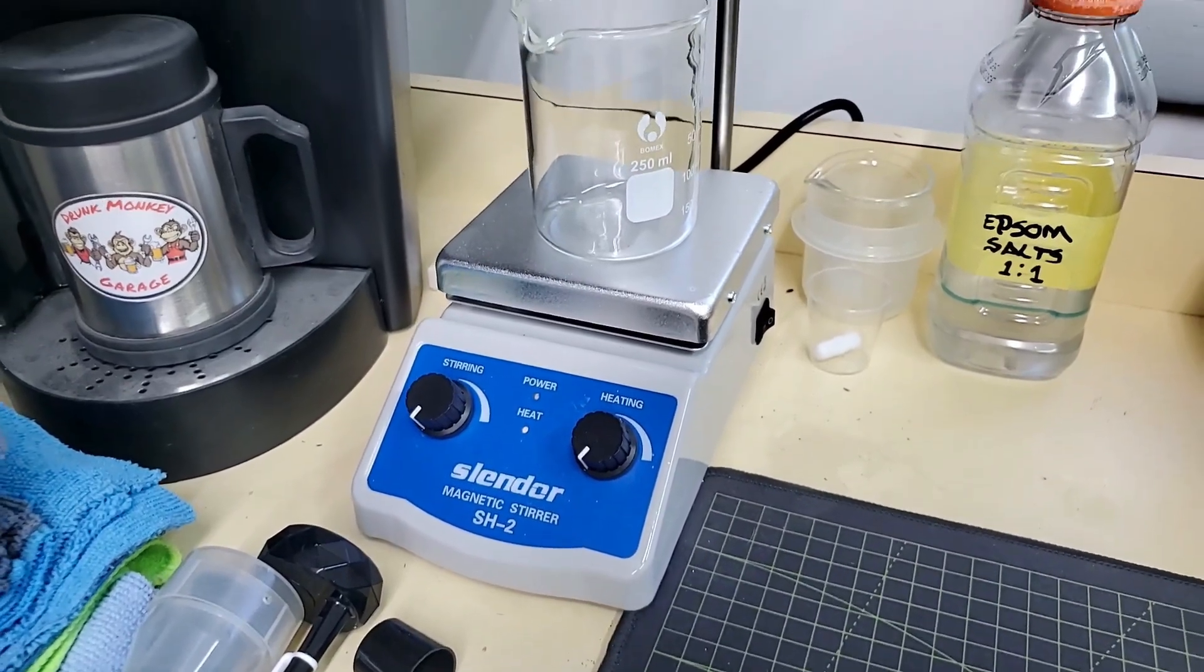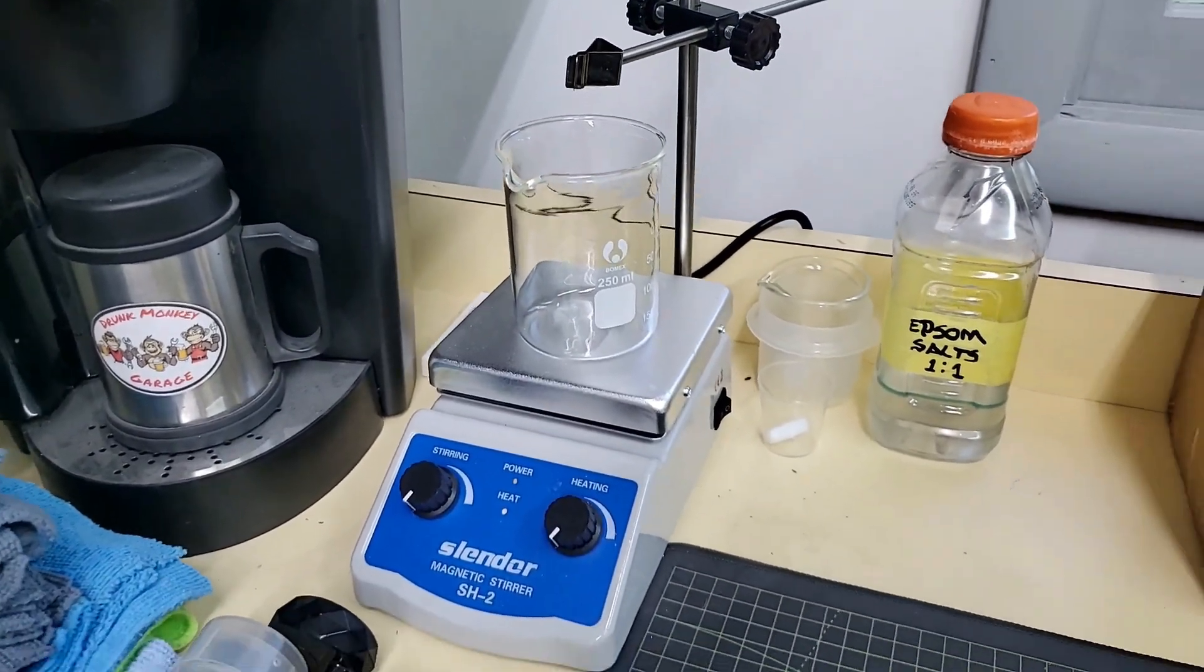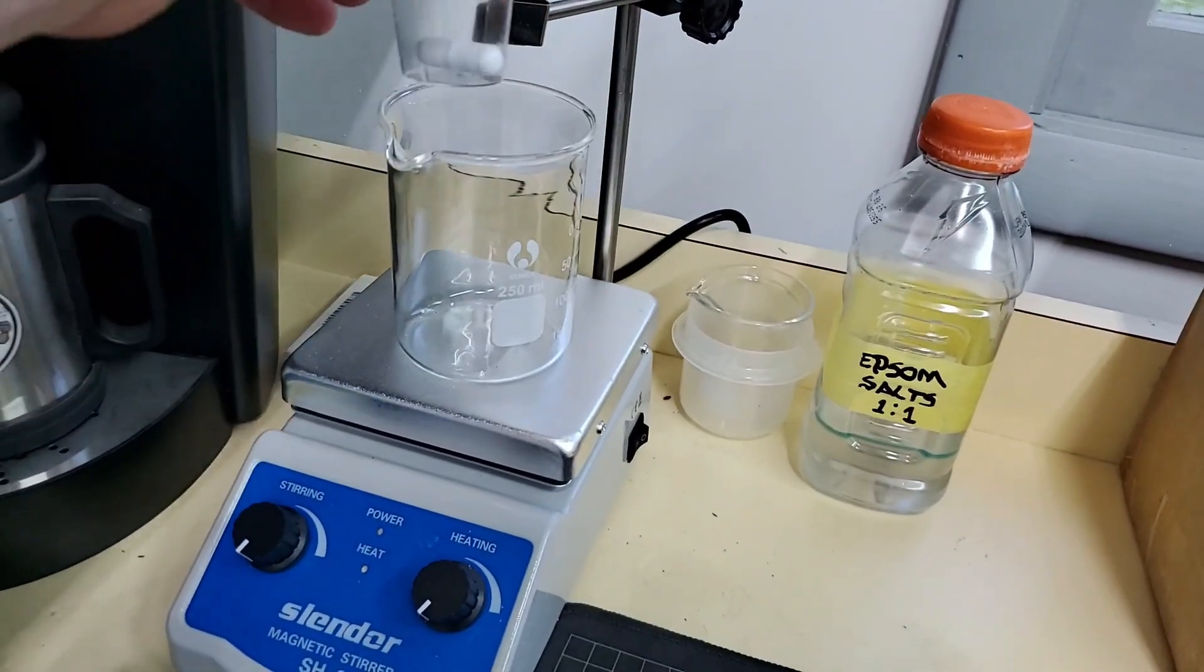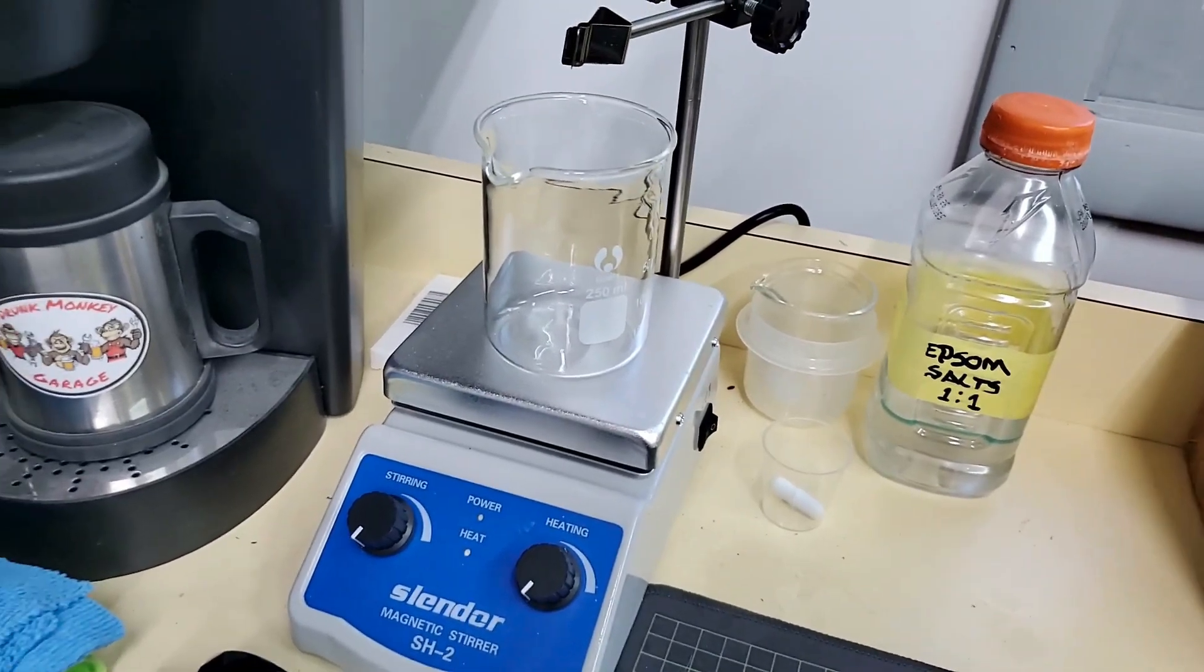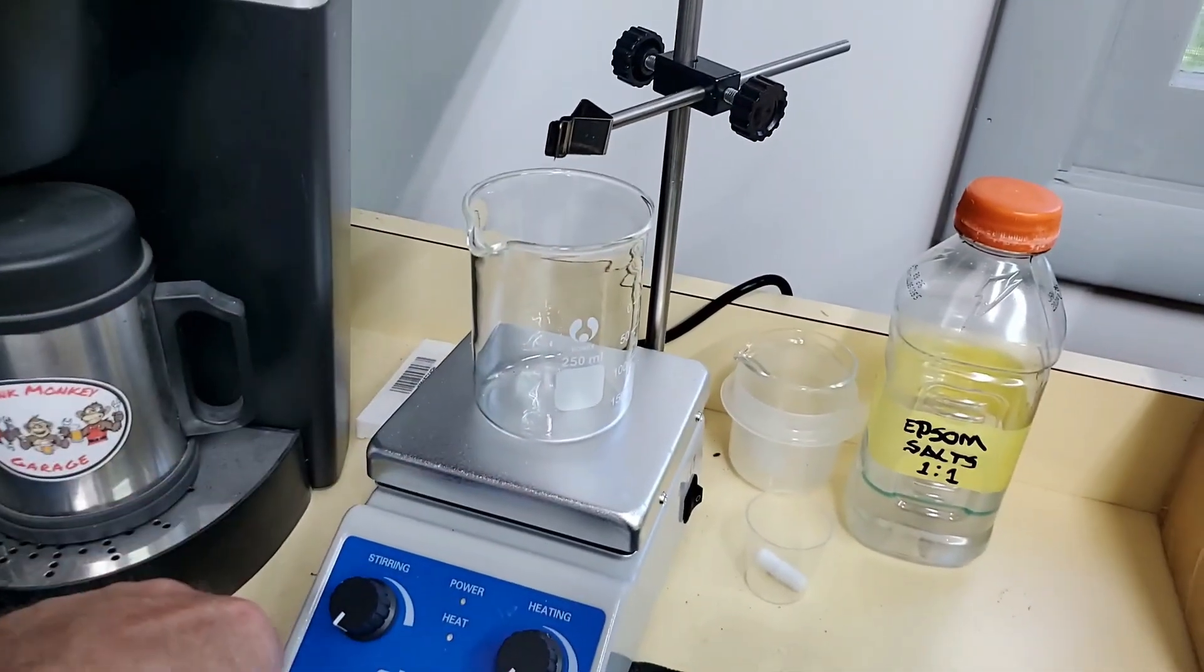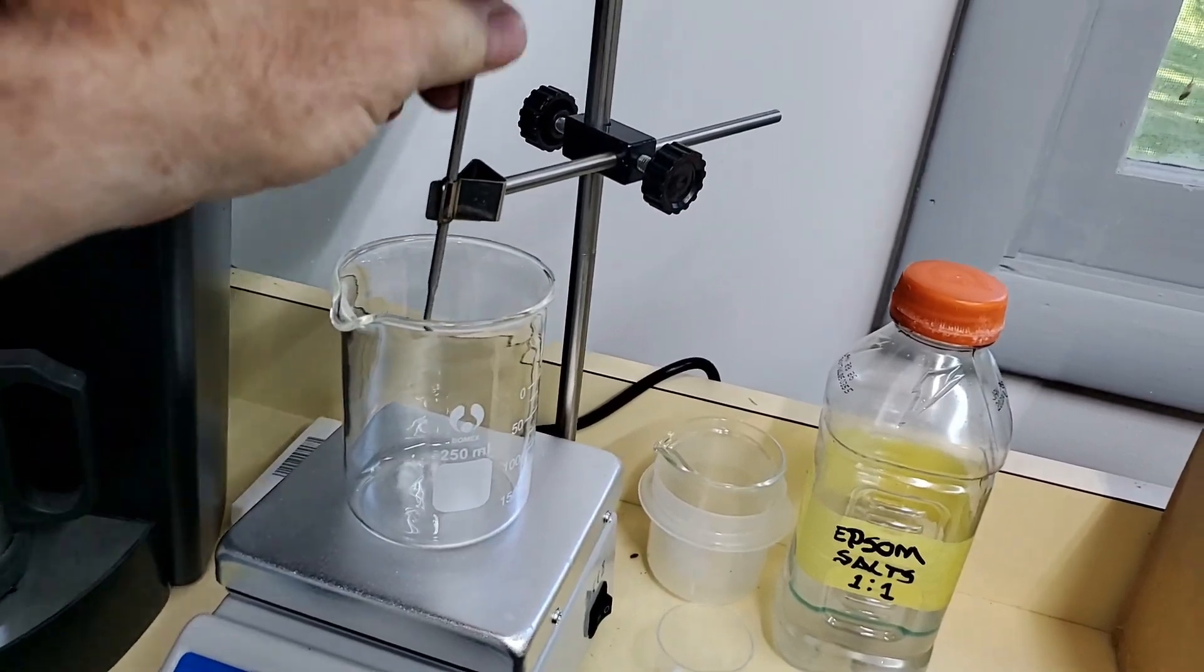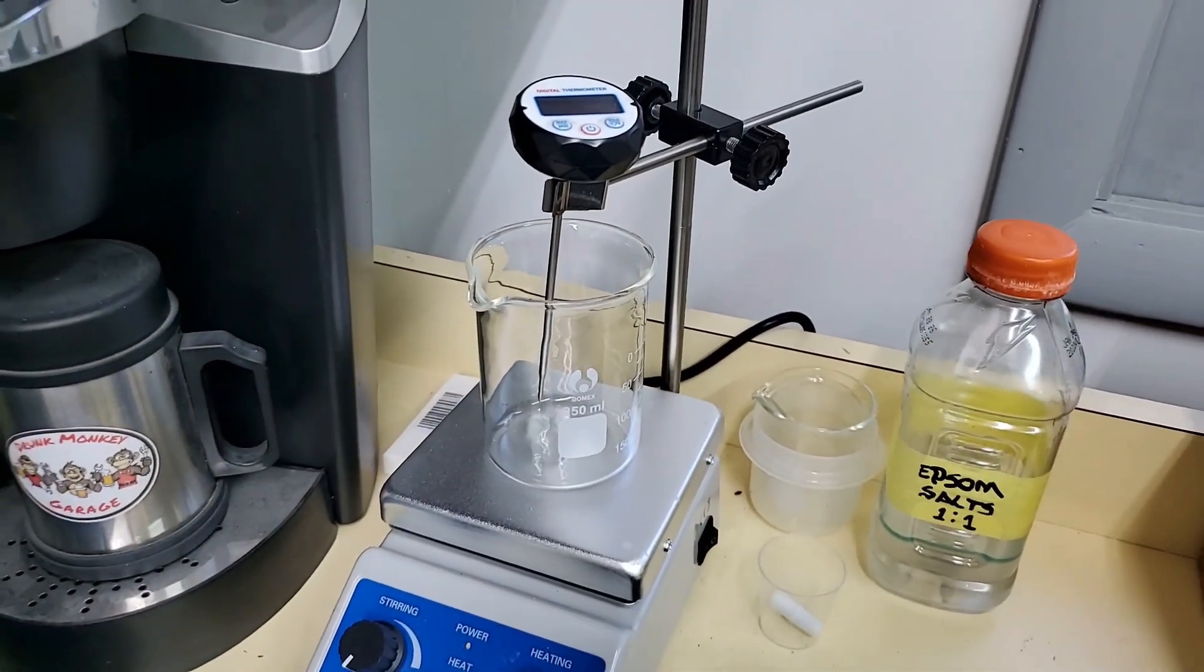This is a magnetic stirrer which also has heating capabilities. Usually find these in science labs and stuff like that. It comes with a little plastic coated metal stirrer. You just stick that down in there and there's a magnet underneath the plate which spins that and stirs up your solution. It also has a way to put a thermometer down in your solution.